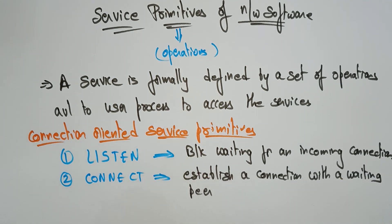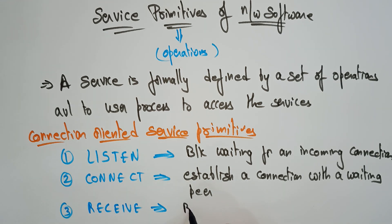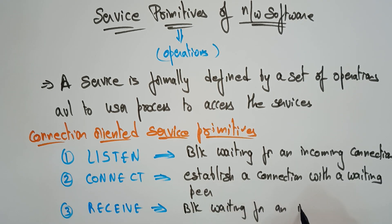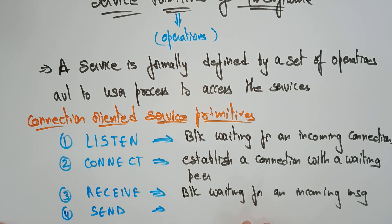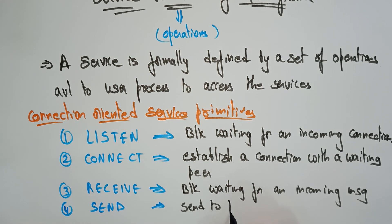The next service primitive in connection-oriented is RECEIVE. These are all the different operations — service operations of network software. RECEIVE means block waiting for an incoming message. And the next primitive is SEND. SEND means send a message to a peer — simply sending the message whenever it is ready.